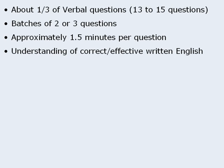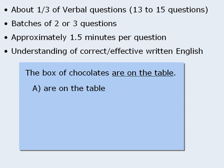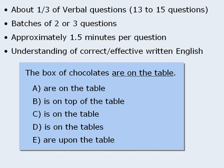The structure of these questions is as follows. First, you're given a sentence, all or part of which is underlined. Beneath the sentence, you'll find five ways of phrasing the underlined part. The first answer choice is identical to the underlined part; the other four are different. If you feel that the original phrasing is best, choose the first answer. Otherwise, choose one of the others.